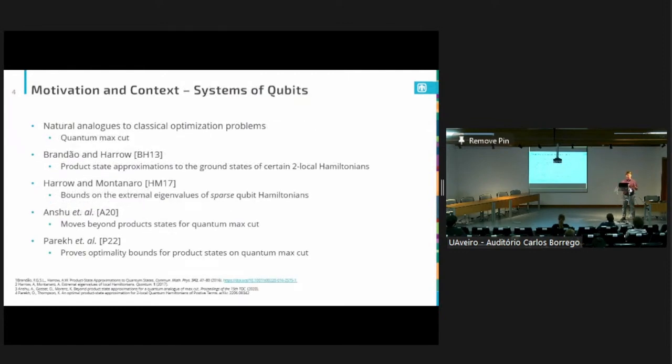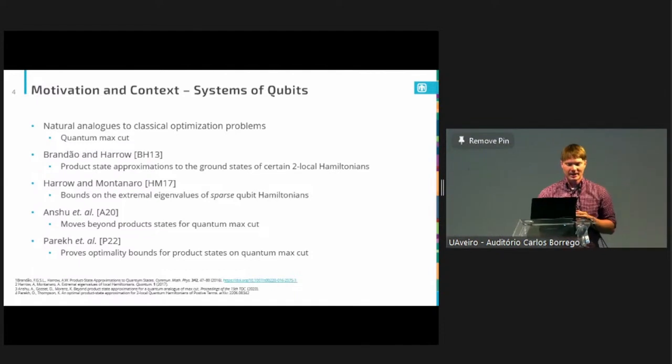In this work, we're going to address local, sparse Hamiltonians. You should think of locality as a condition on the number of qubits or particles that each term in your Hamiltonian interacts with. And you should think of sparsity as a condition on the number of Hamiltonian terms for which a given particle sort of pops up in. A little bit of background just to lay the scene for the state of classical approximation research. It really falls into two camps. Most of the research has been done on systems of qubits, and that's because this is the setting where you find a lot of the natural analogs to classical optimization problems.